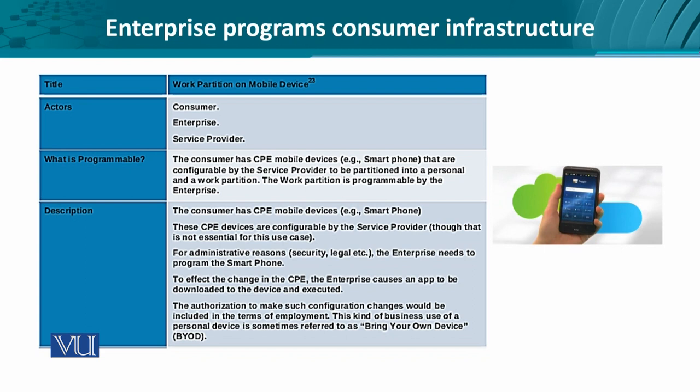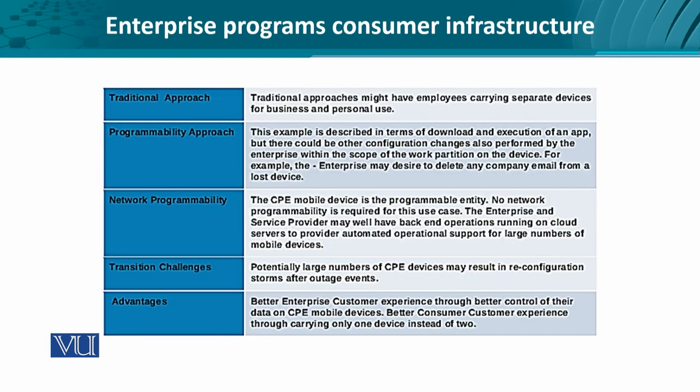The AT&T Toggle application is an example of partitioning the workplace on a mobile device. Looking at the programmable aspect: the enterprise communicates with the smartphone for security and legal purposes and enables the smartphone to change its behavior as per the enterprise's requirements.